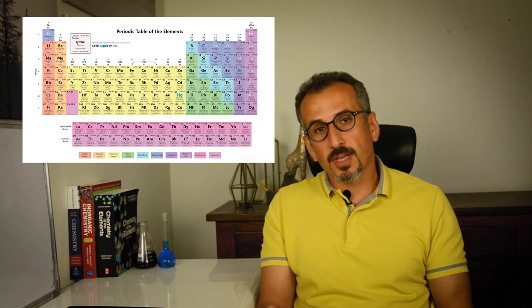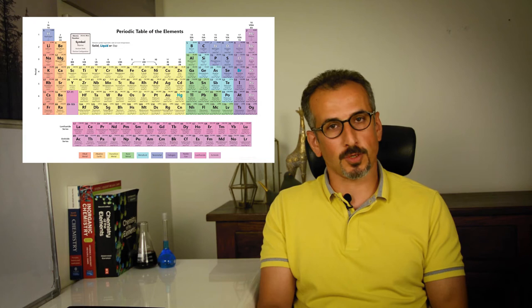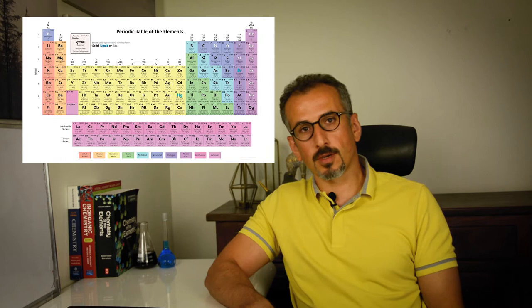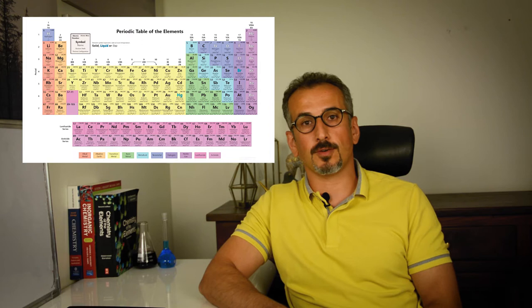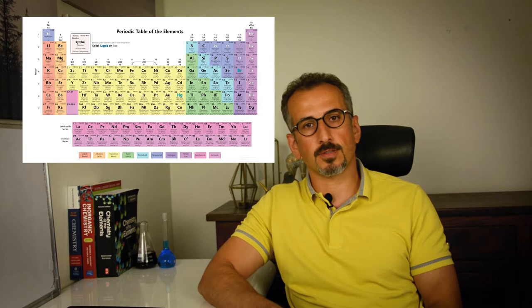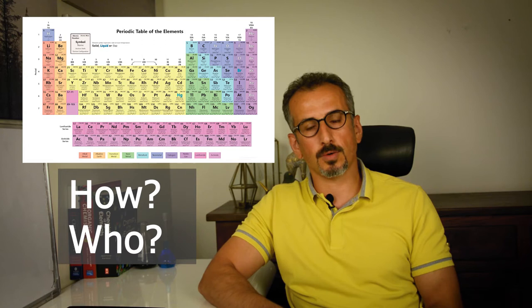Periodic table of elements — the table that displays the chemical elements in a special order in different columns and rows. You may have seen it on the cover of a book, or on a wall in places like your university or even your high school. The pattern that this table presents is based on several properties of elements. Today in this video I want to discuss with you how and by whom this table was discovered. This is the story of the Periodic Table.